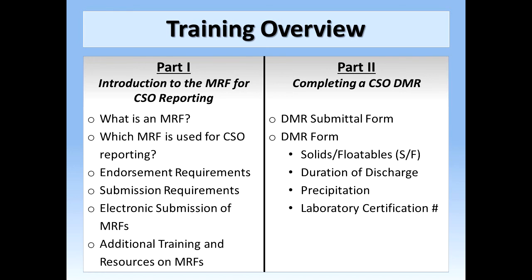In the second part of this training series, we will explore in detail the specific Monitoring Report Forms that will be used for CSO reporting, called Discharge Monitoring Reports, or DMRs. First, we will discuss the information presented on the submittal form that accompanies a DMR, as well as the information necessary to complete this form. Next, we will explore the four parameters that, depending upon the circumstances, will appear on a CSO outfall's DMR: solids and floatables, duration of discharge, precipitation, and laboratory certification number. Lastly, as we discuss each of the parameters, we will proceed to complete an example DMR using a series of hypothetical examples.